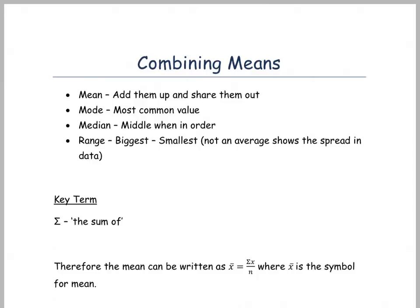Now the range is the biggest minus the smallest. Now remember the range is not an average, it just shows you the spread of data. The bigger the range usually the less consistent maybe a sportsman might be in the number of goals they score in a game, or it might show the range of the wages that a company pays from the cleaner up to the manager.